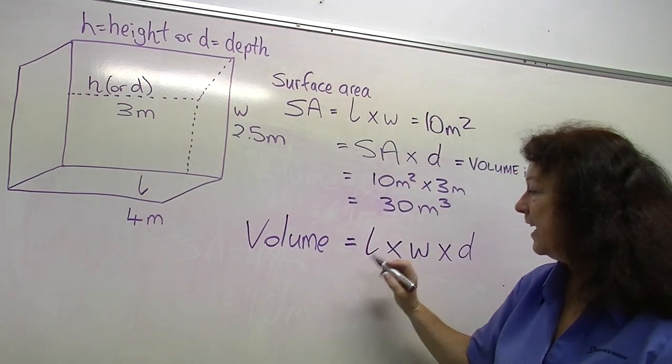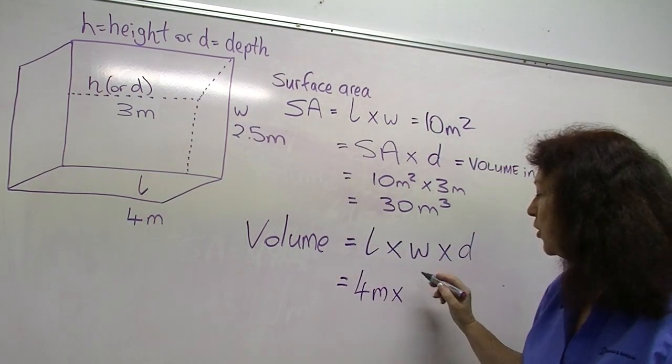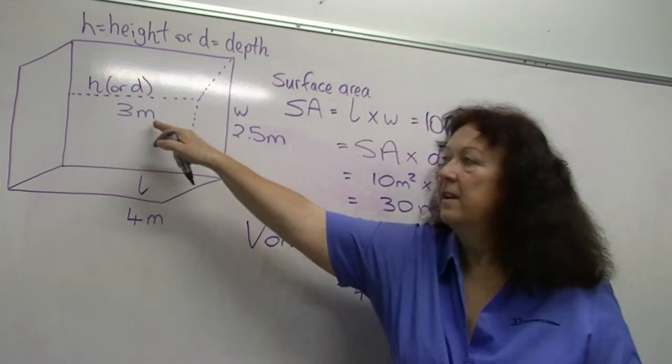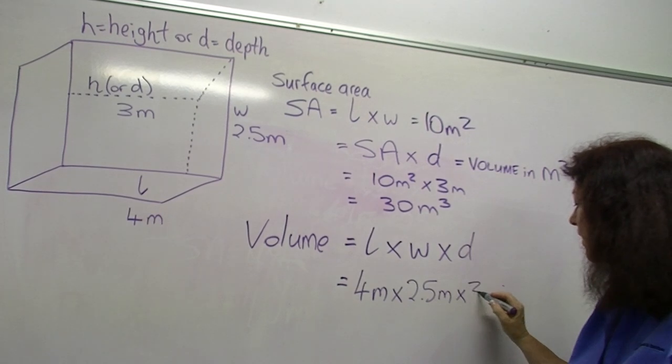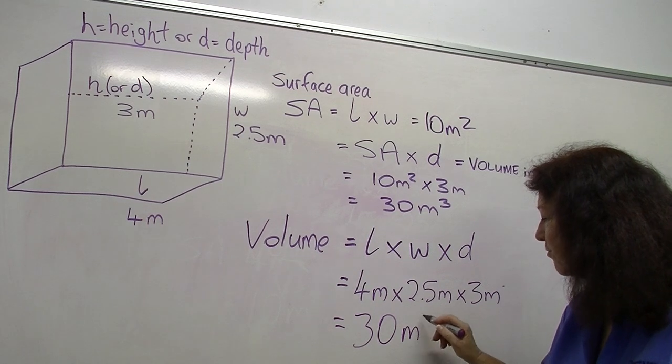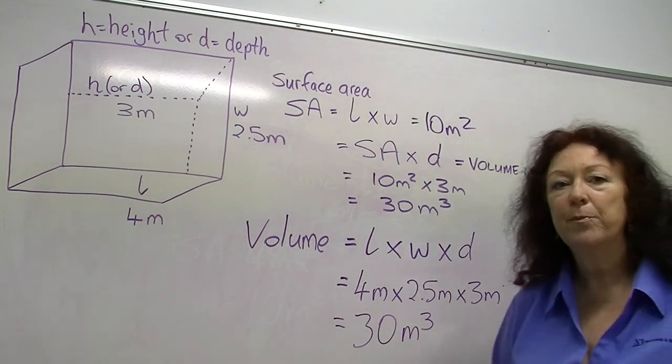So, easy. We've got four meters times 2.5 meter width times a 3 meter depth, and that gives us the same answer, not surprisingly. We end up with a volume of 30 cubic meters.